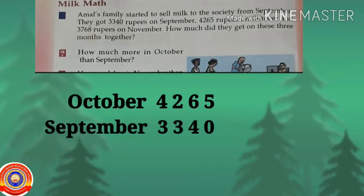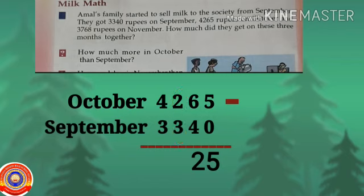4265 minus 3340: 5 minus 0 is 5, 6 minus 4 is 2. We can't subtract 3 from 2, so borrow 1 from 4 — 2 becomes 12, and 4 becomes 3. 12 minus 3 is 9. The answer is 925. How much more amount in October than September? 925 rupees.